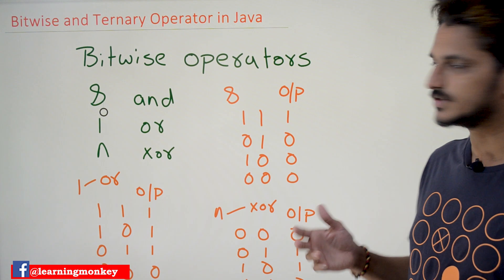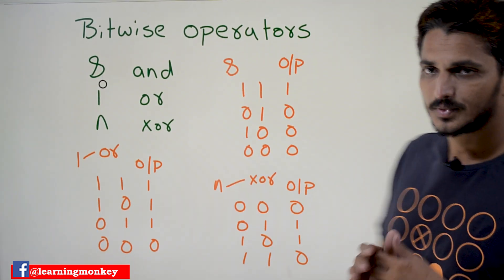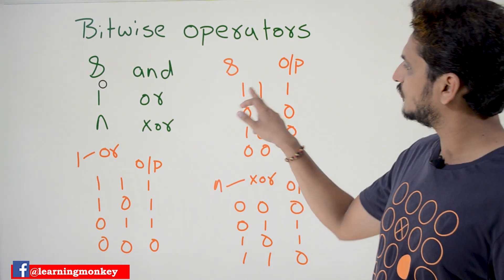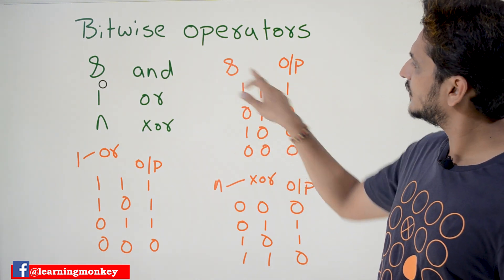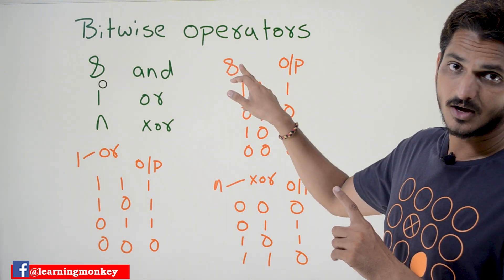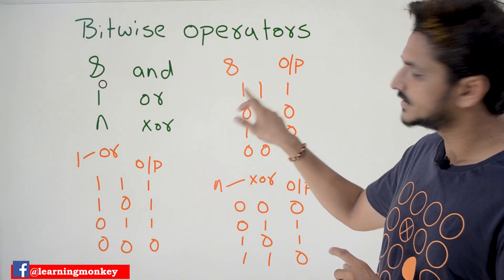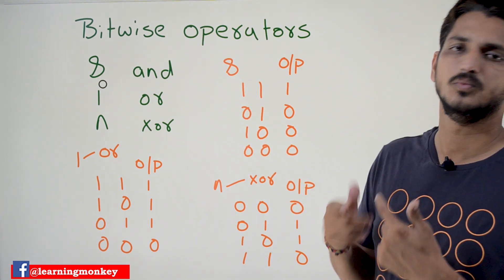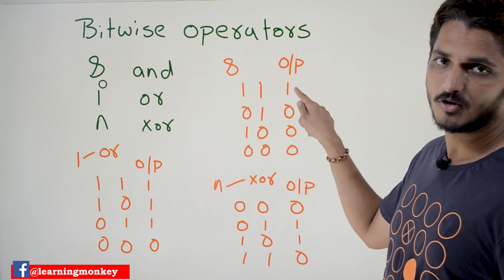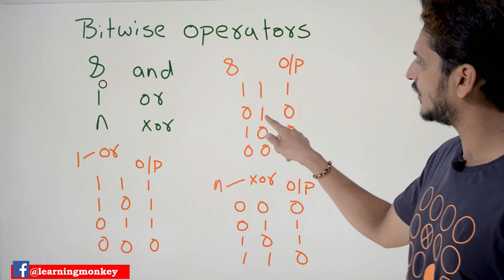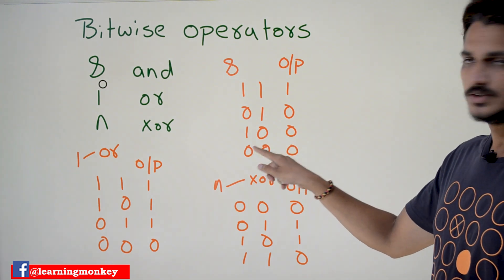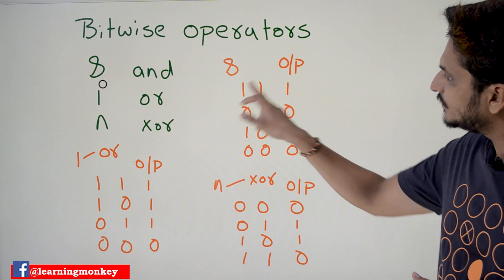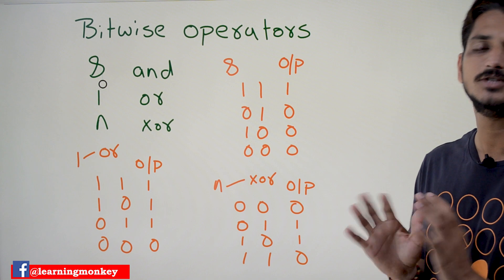First, understand what a bitwise operator is — it applies on two bits. Bitwise AND works like this: if both the bits are one, then only bitwise AND is going to be one, otherwise it is zero. So: 1 AND 1 = 1, 1 AND 0 = 0, 0 AND 1 = 0, 0 AND 0 = 0. If both the bits are one, then only the output is one, otherwise it is zero.